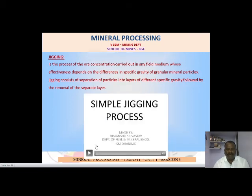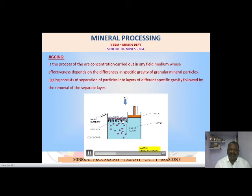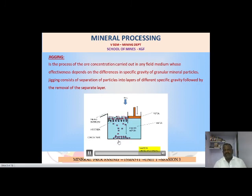Now we will see a video clip so you can easily understand the jigging process. A piston applies air pressure, jigging the water so that the feed mixture of crushed material enters at the top. Heavier particles collect at the bottom as concentrated ore, while lighter impurity particles rise to the top and overflow as tailings, which are treated as reject. The heavier particle concentrate collected at the bottom is taken as concentrated ore.